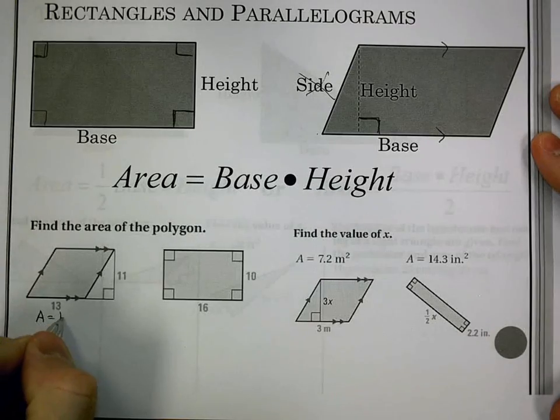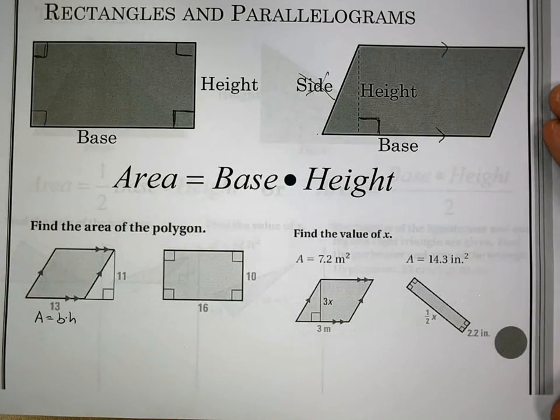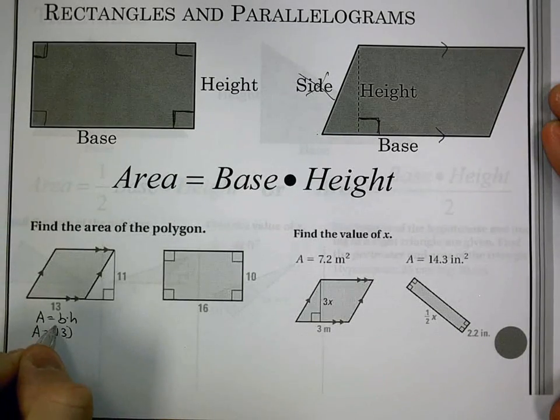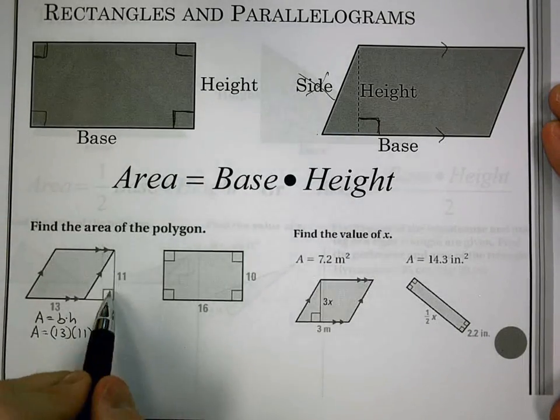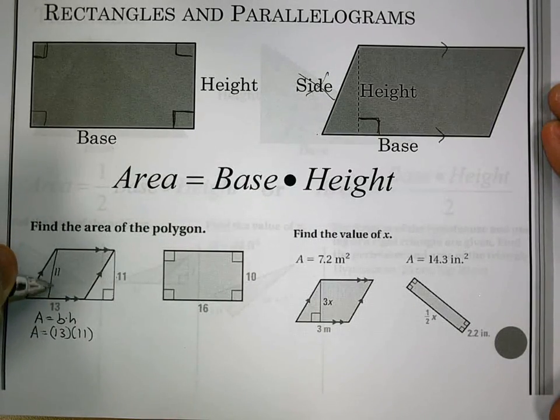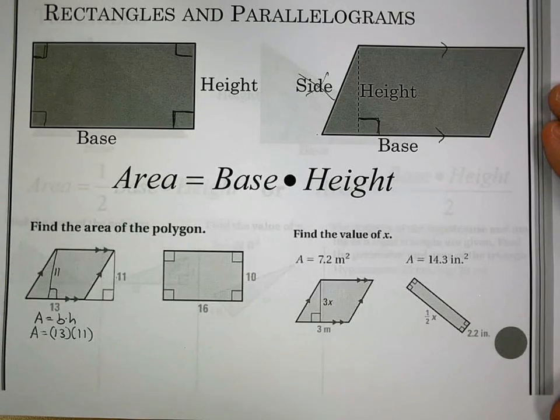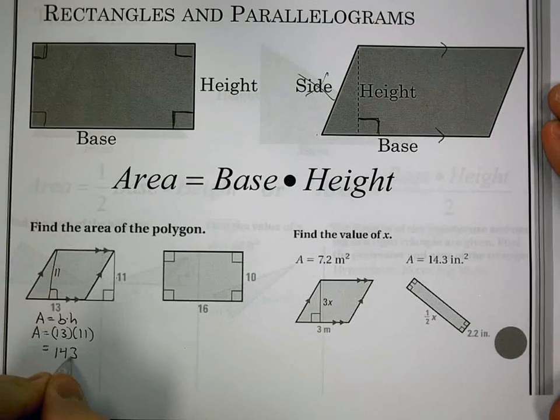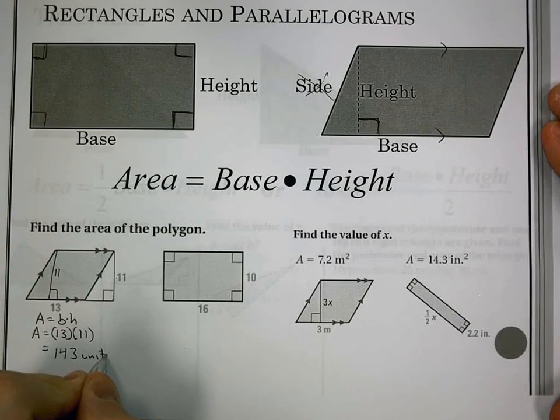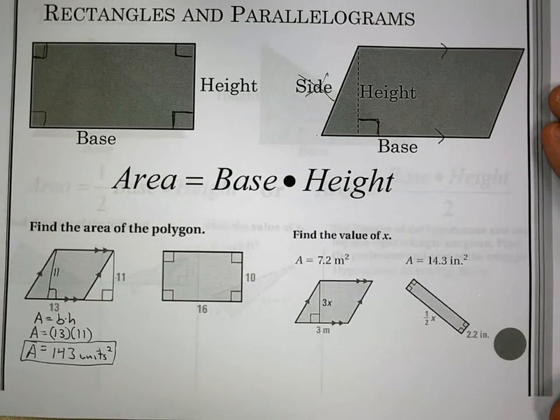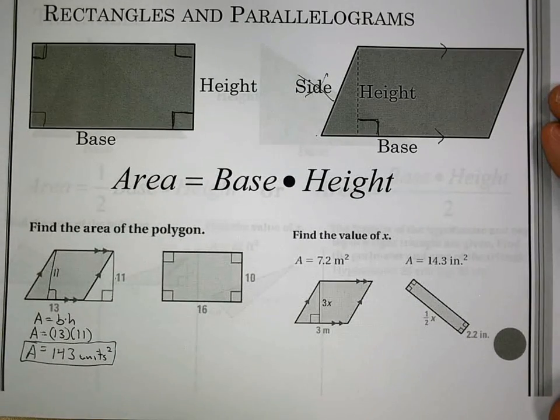So we'll work through a few examples for this one. Every time I do the problem, I write my formula first. So area equals b times h, base times height. I plug in my values. That is 13 times 11. Now, even though this 11 is on the outside, it's still talking about the height. I can move it in here, and it's still the height of the parallelogram. And then multiply that, and I get 143 units squared for my area. Show all my steps. Multiply. Circle my answer. Name the units.